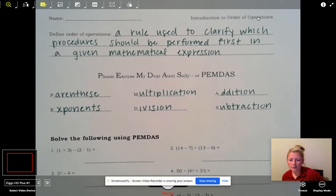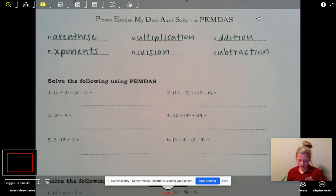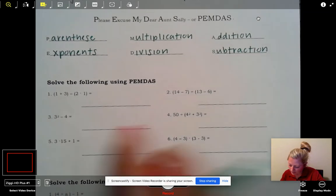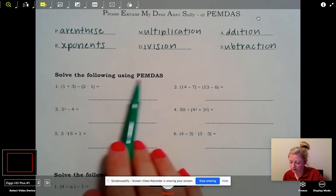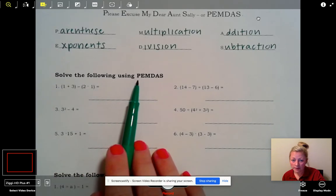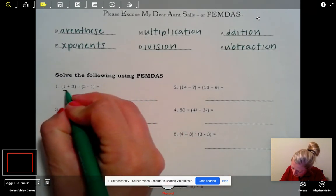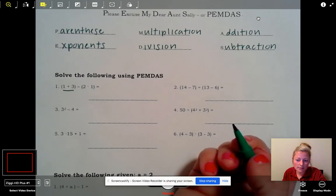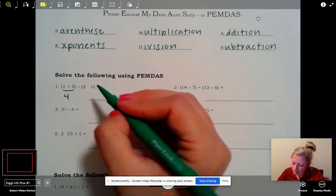A lot of us refer to this as PEMDAS or GEMDAS, and that's this little acronym here. Another way to think of this is please excuse my dear Aunt Sally. It's just a way for us to remember which thing happens first. So the P stands for parentheses, the E stands for exponents, the M stands for multiplication.